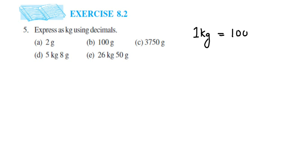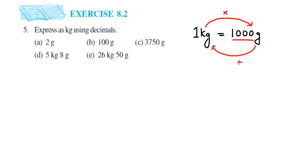So in one kilogram there are one thousand grams. When you're converting kilogram into grams — that is, a higher unit to a smaller unit — you do multiplication. When you're converting a smaller unit to a bigger unit, like grams to kilograms, you have to divide by one thousand, because one kg equals one thousand grams. In this question we're converting grams to kilograms, so we divide by one thousand.